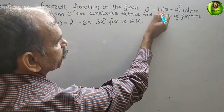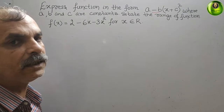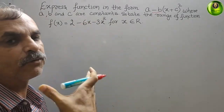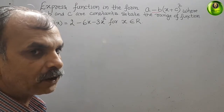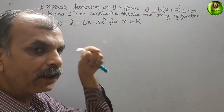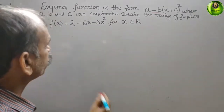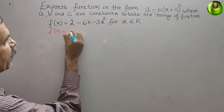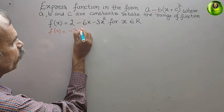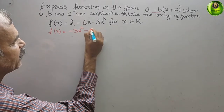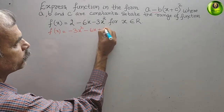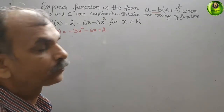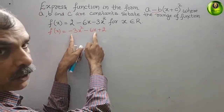To convert this into the required form, the easy way is to arrange it in standard form — that is, powers in decreasing order. So f(x) becomes minus 3x square minus 6x plus 2.